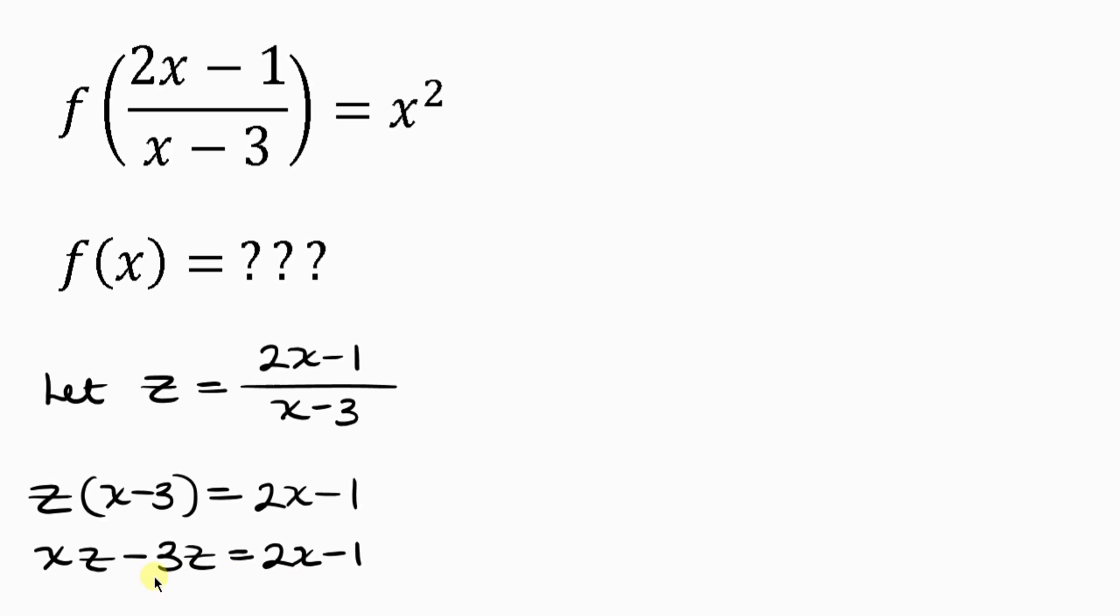Now remember, we want to isolate x, so let's collect like terms. That means I'm going to be moving this 2x to the left hand side. So I've already got xz on the left as 2x crosses, it becomes minus 2x. Now I'm going to be moving this negative 3z to the right so that it becomes positive 3z. Now I've already got negative 1 here, so I'm going to be writing that down.